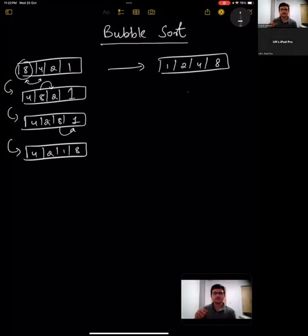As we can see now 8 is at its correct position. We wanted 8 at the end of the array since it's the biggest element in the array.